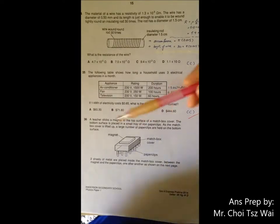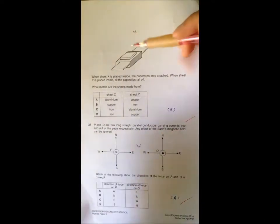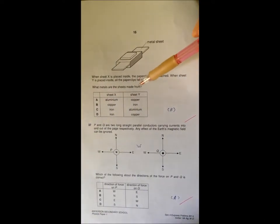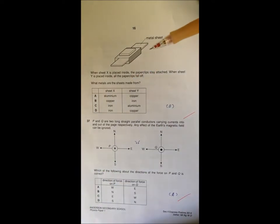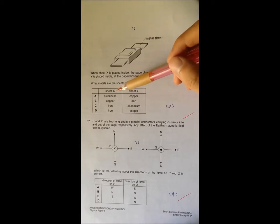Okay, 36. Question 36 is interesting. You need to know that if the material is magnetic, it will divert the magnetic field line through them. So that's why we call it magnetic field shielding. When you have sheet X...